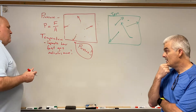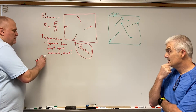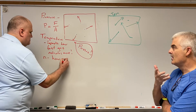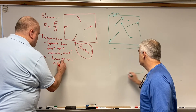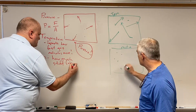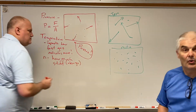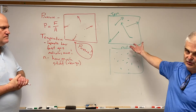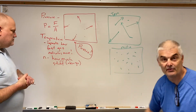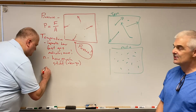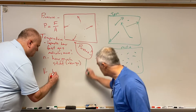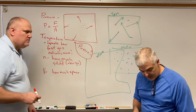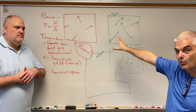The third variable is moles. Moles is a big fancy chemistry word, but it has to do with how many gas particles are in our box. Sometimes you've got more gas particles in the box, or in the balloon, or whatever container. Moles is how much stuff you've got. The last variable is volume — that's just how big of a box you have.